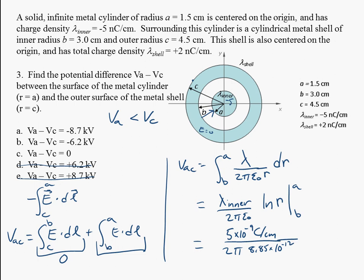And then the natural log of our two different places, which are place B, which is at 3 centimeters, and A, which is 1.5 centimeters.